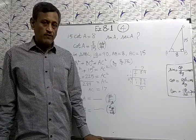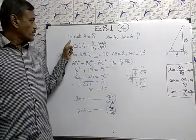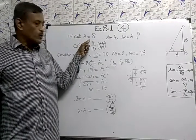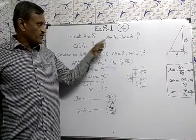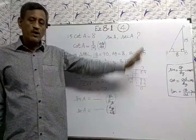This is exercise 8.1, question number 4. 15 cot A equals 8. Find sin A and sec A.